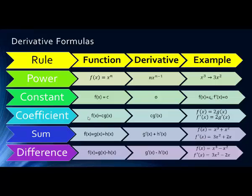Then we have the coefficient rule. This is where a function equals a constant c times another function, giving us c times g prime of x. All this is saying is we can pull the constant out of the function and then apply it to the derivative. If f of x equals 2 times g of x, then the derivative of f of x is 2 times the derivative of g of x — just pulling that constant out.